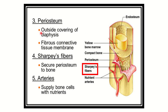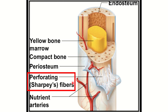The periosteum is the outside cover of the diaphysis — it is the fibrous connective tissue covering the bone. Sharpey's fiber secures the periosteum to the bone and is supplied by the nutrient artery. In this second picture it is more clear: this white fiber connects the periosteum with the bone and is known as perforating fibers or Sharpey's fiber.